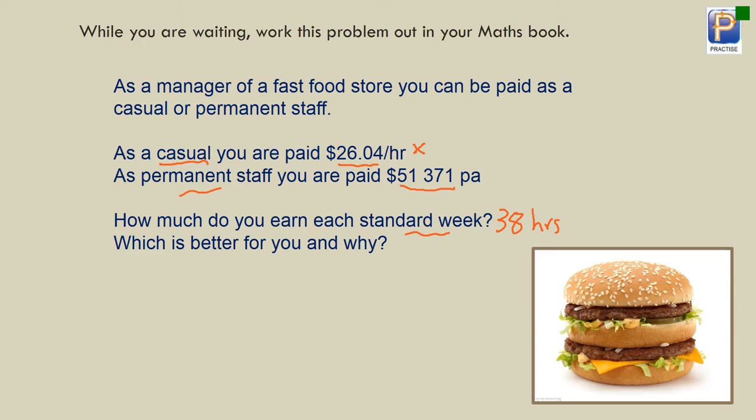So as casual, that much times 38 hours equals, if I get my calculator, 38 hours times $26.04 is $989.52. Now with the permanent one, I get $51,371 per annum per year. I want it in weeks, divided by 52 weeks. So that's $51,371 divided by 52 in your trusty little calculator. It's $987.90 or thereabouts.